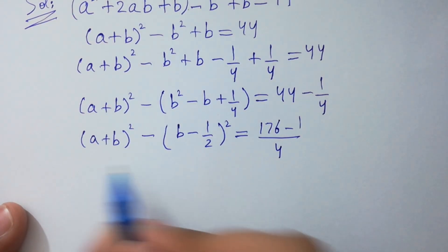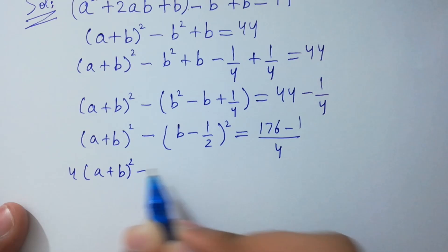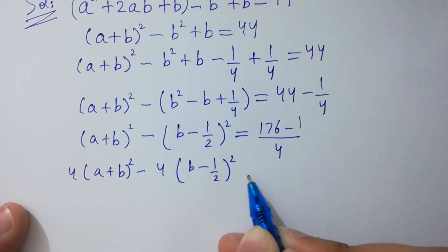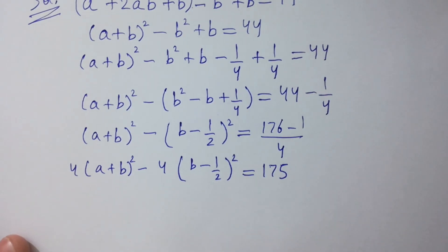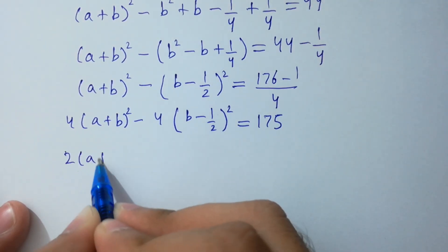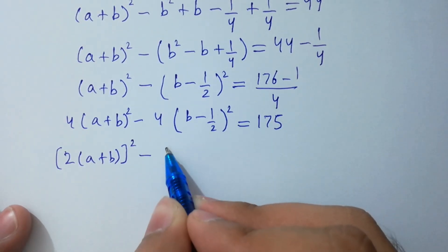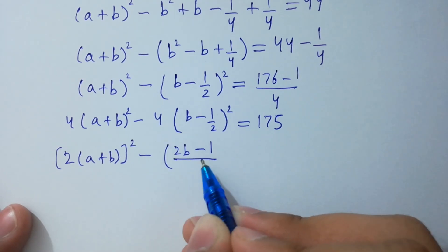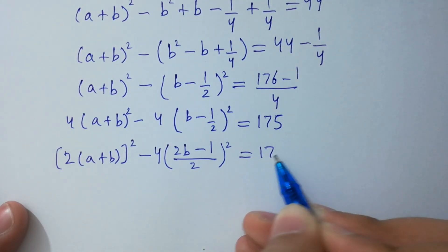(a + b)² minus 4·(b - 1/2)² = 175. This can be written as (2a + 2b)² divided by 4, minus (2b - 1)² divided by 4, times 4, equal to 175. The 4s cancel, giving (2a + 2b)² - (2b - 1)² = 175.